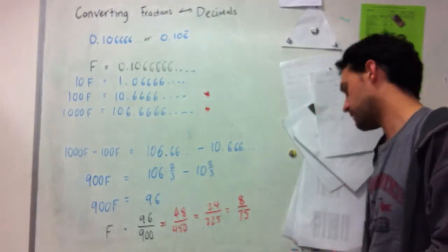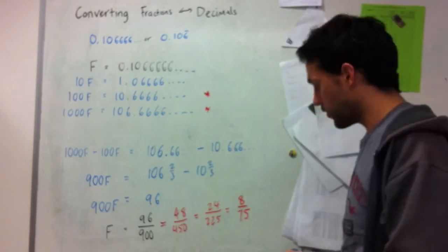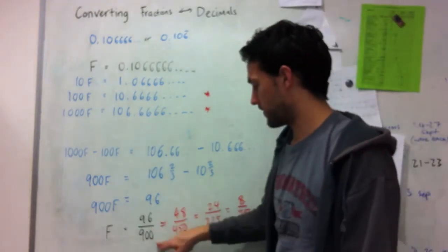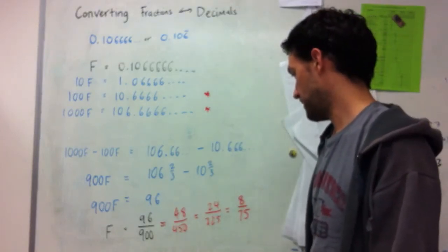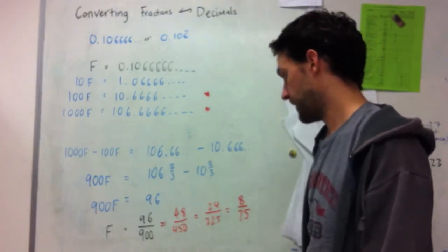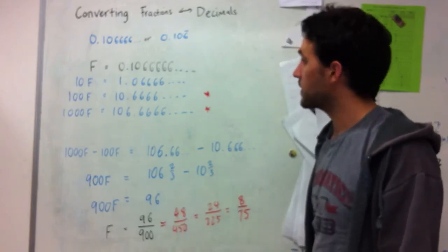And then at this point, I believe, yeah, at this point those numbers are relatively prime. So what I also could have done is look for the highest common factor of these numbers, which must have been 12, I guess. And then if I divided 96 by 12 and 900 by 12, I'd get to here as well.